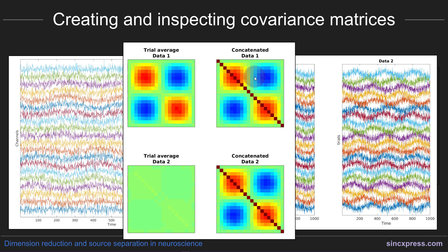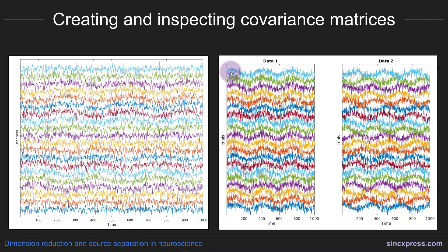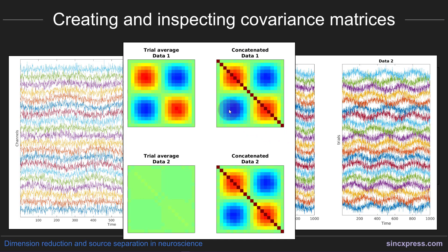Instead, I computed the covariance matrix separately for each trial — for example, 30 trials yields 30 channel-by-channel covariance matrices — and then averaged all 30 together. The resulting covariance matrix is essentially identical for dataset one (phase-locked) and dataset two (non-phase-locked). So you have to think really carefully about how to compute covariance matrices, because it has real implications for the kinds of results and features you can extract from the data.